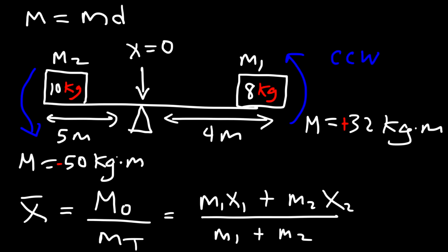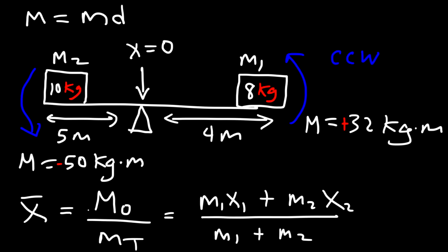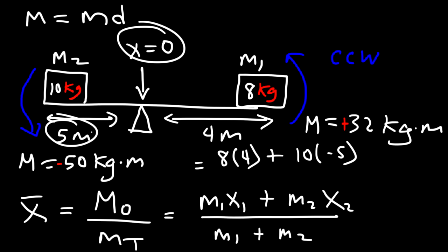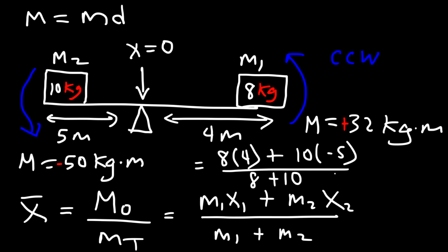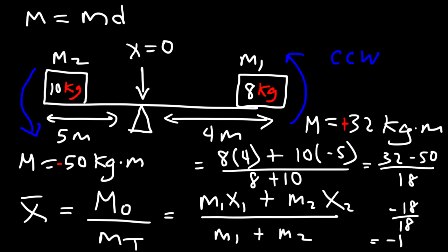So the total moment about the origin is negative 50 plus 32, which is negative 18. Using the formula: m1 is 8, x1 is positive 4; m2 is 10, x2 is negative 5. Divided by total mass 8 plus 10 equals 18. So 32 minus 50 is negative 18, divided by 18, gives negative 1. The center of mass along the x-axis is at x equals negative 1.